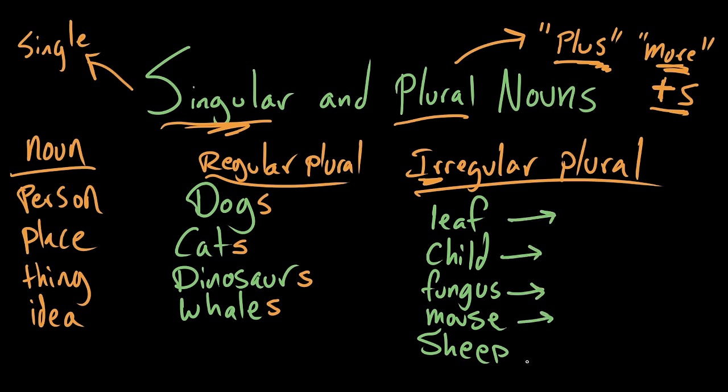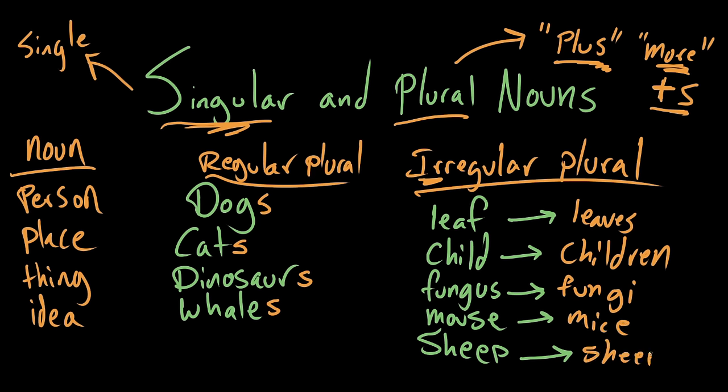This is how you do it. Each one of these words corresponds to a class of words that has its own unique pluralization standards. So leaf becomes leaves. Child becomes children. Fungus becomes fungi. Mouse becomes mice. And sheep stays sheep. Believe it or not.